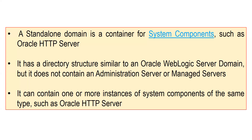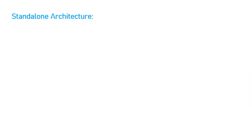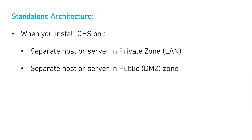The domain can contain one or more instances of system components of the same type, such as Oracle HTTP Server. Once the installation is done, you can create multiple OHS instances — for example OHS1, OHS2, OHS3, and OHS4 — for load balancing and traffic diversion.